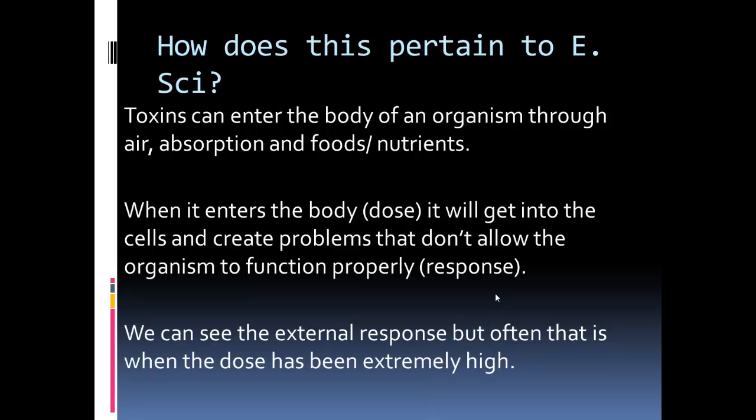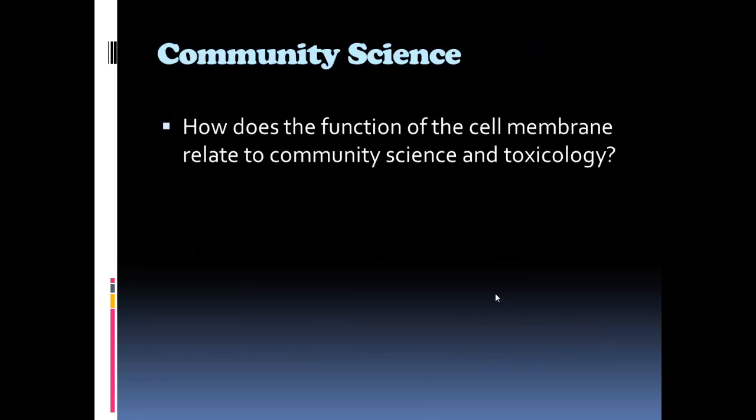We can see the external response, but often that is only when the dose has been extremely high. One small toxin gets into a cell and one cell goes off — we don't really see the result. But if a lot of toxins get into each cell, our whole body will be sick. For our discussion, think about how the function of the cell membrane relates to community science and toxicology. We need to talk about how toxins affect us not just on a small scale, but on a larger scale — community science. See you in class.